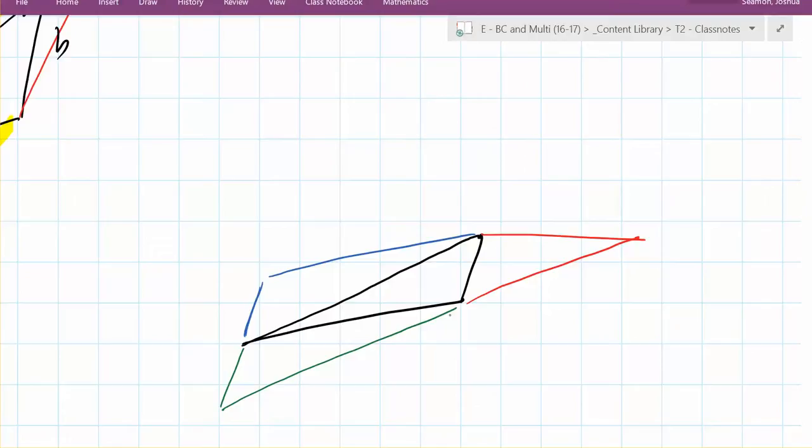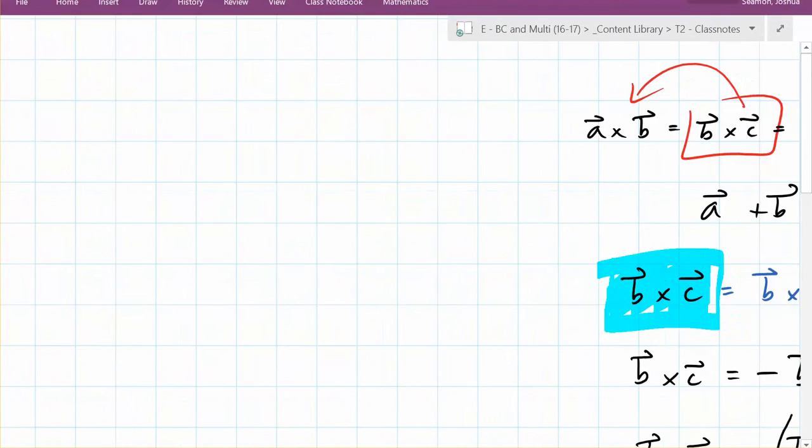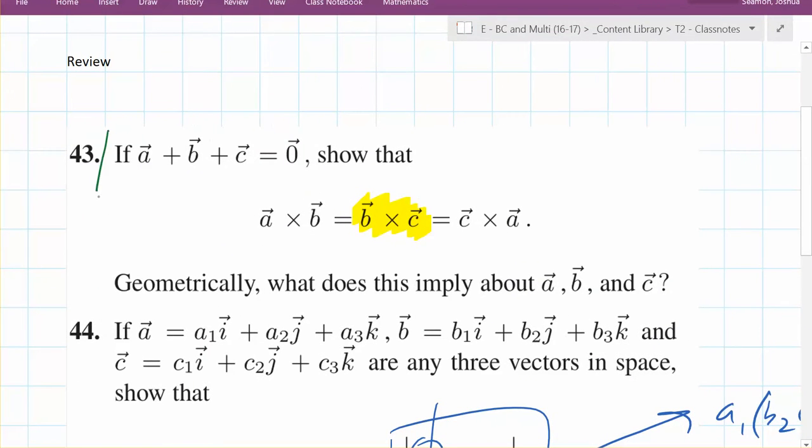I would have just said they're coplanar. If you try, if you use, so what's the scale? If this is true, by the way, so here's another thing to think about here. And you can do this with logic. If this is true, this is just a side question. If that's true, what's A dot B cross C?